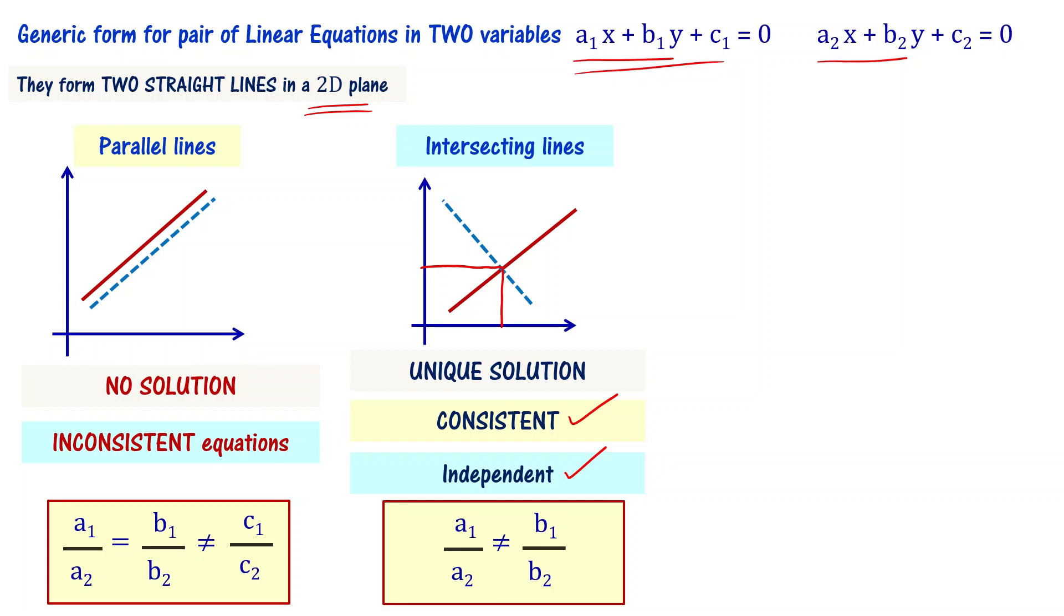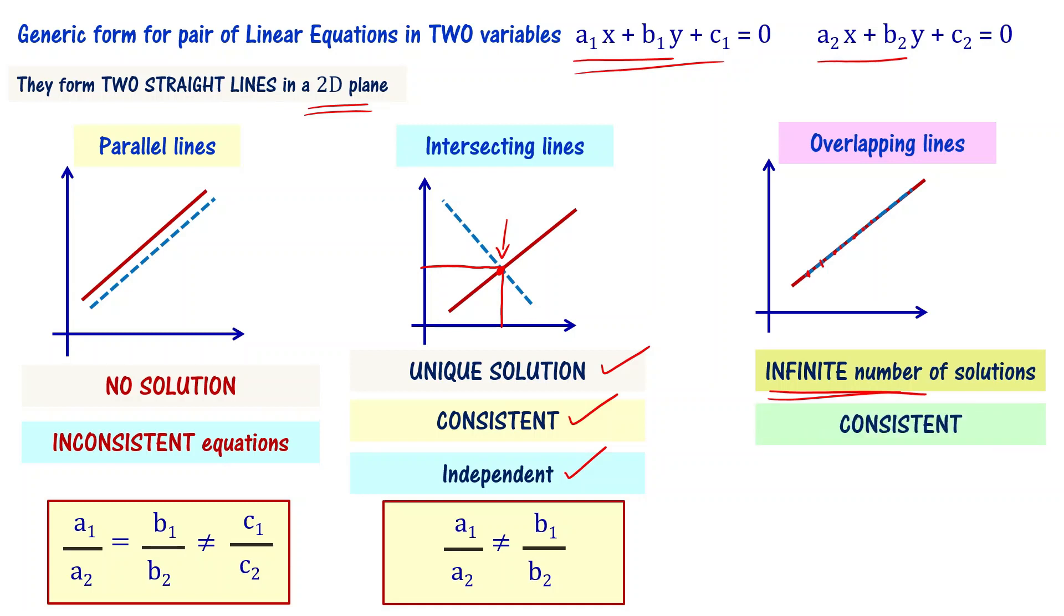Sometimes the lines can be overlapping, meaning one line overlaps with the other line. When you have overlapping lines, it means that you have infinitely many number of solutions. If you have only one point intersection, one unique solution. If you have many points common to both the lines, you have infinite number of solutions.